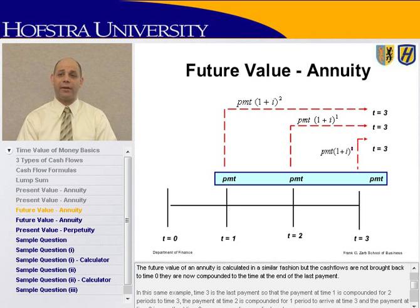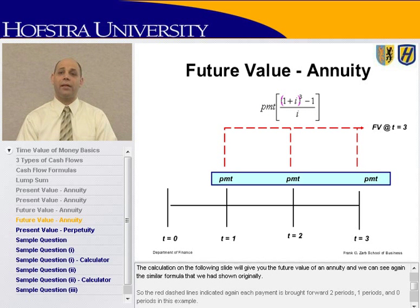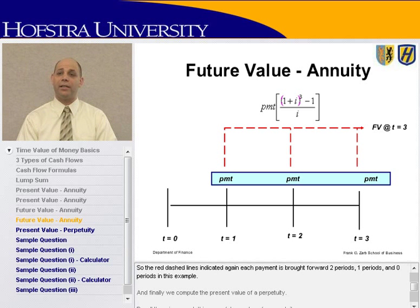The future value of an annuity is calculated in a similar fashion, but the cash flows are compounded to the time of the last payment rather than brought back to time 0. In this example, time 3 is the last payment. The payment at time 1 is compounded for two periods to time 3; the payment at time 2 is compounded for one period; and the payment at time 3 requires no compounding. The red dashed lines indicate each payment brought forward two periods, one period, and zero periods.